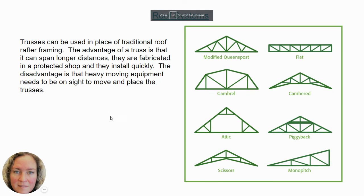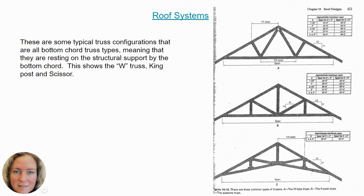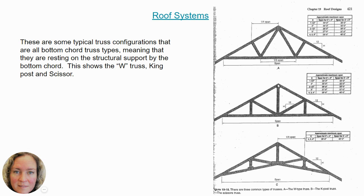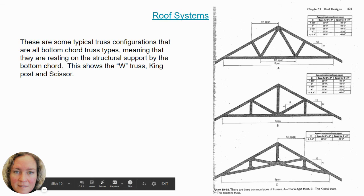Another way to frame a roof instead of traditional rafters is to use trusses. The advantages of a truss are that they span much longer distances, are prefabricated in a protected shop, and can be quickly installed. The disadvantage is that you usually can't install them with one person or even a crew of two — roof trusses are extremely heavy and need to be placed by a crane. Common truss types include the W-truss (named for its shape), the king post truss (with a center post holding up the ridge), and the scissor truss.